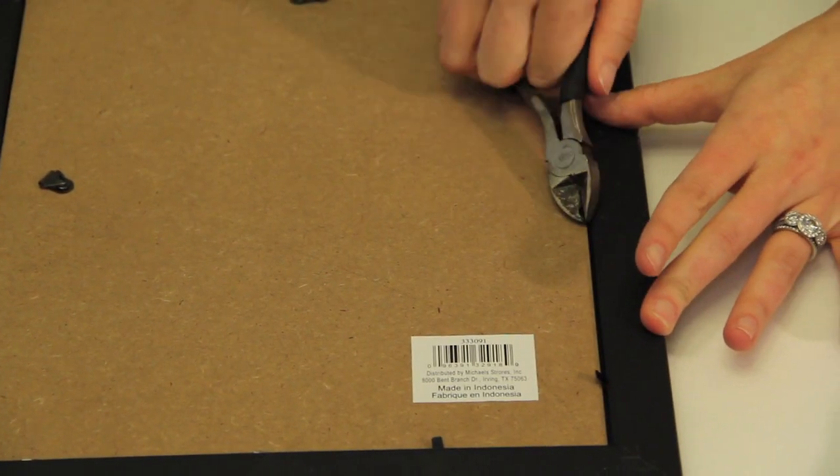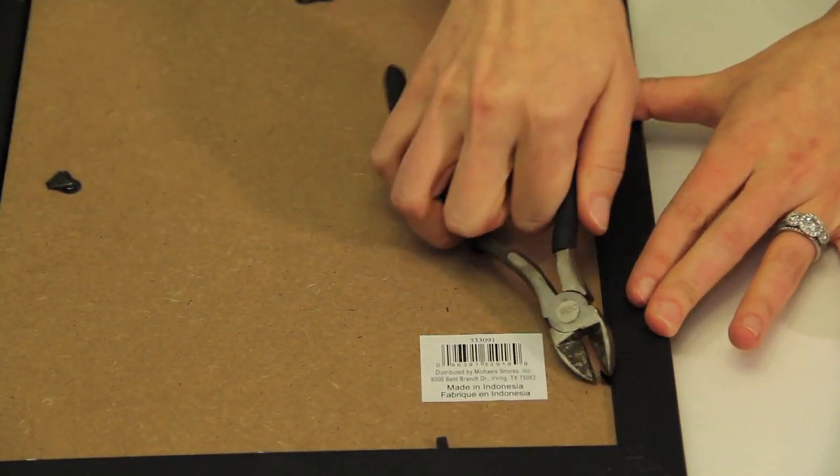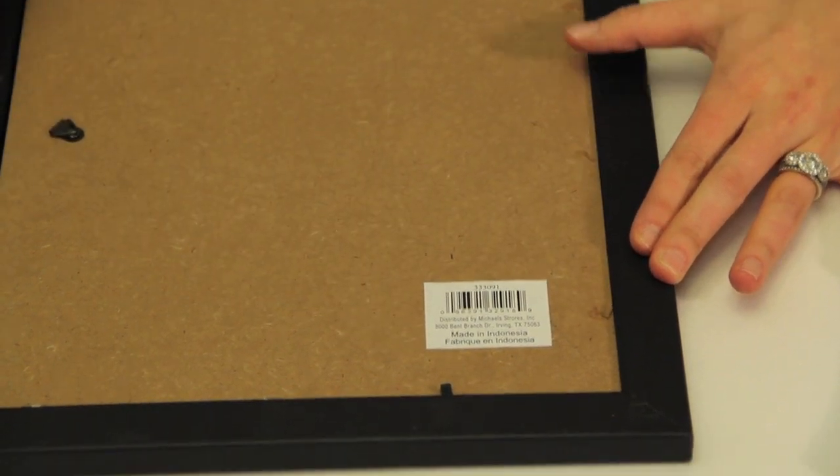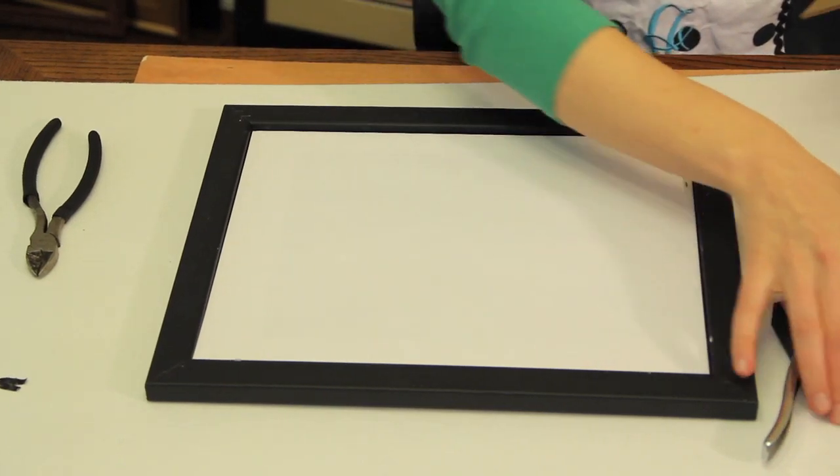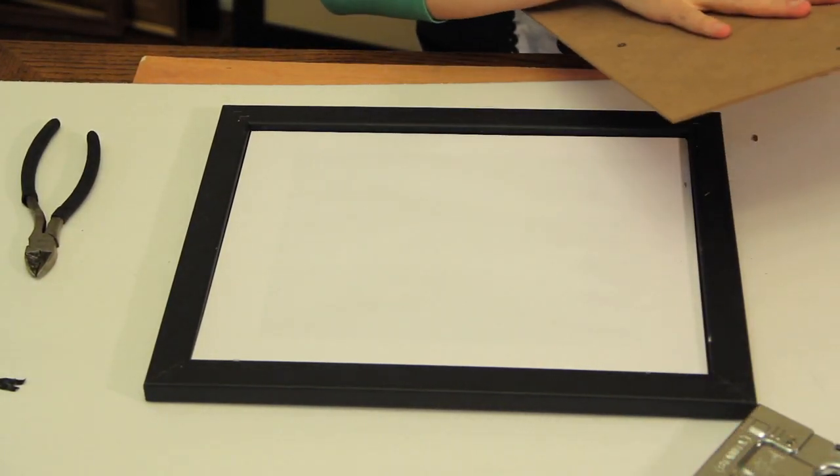You're going to want to take your backing off. This is cardboard backing. If it has gotten wet or moisture has gotten to it, I suggest going ahead and just tossing the backing.